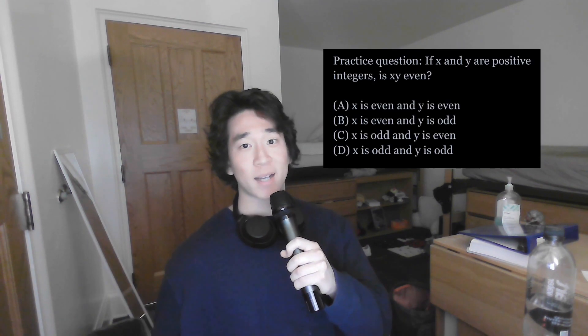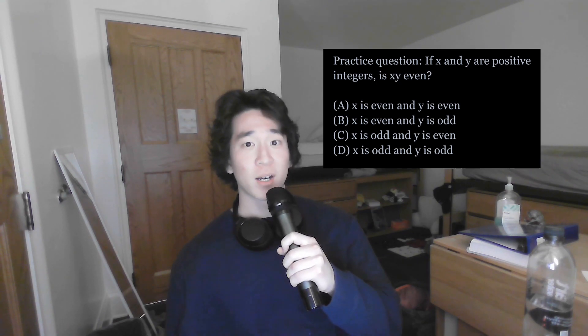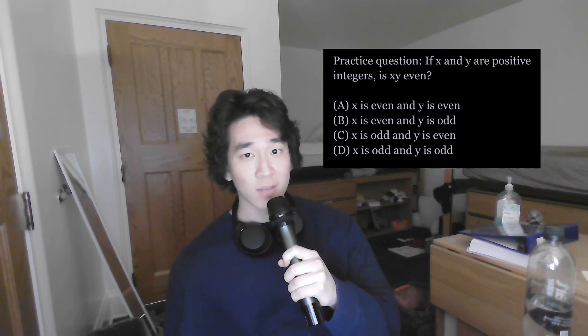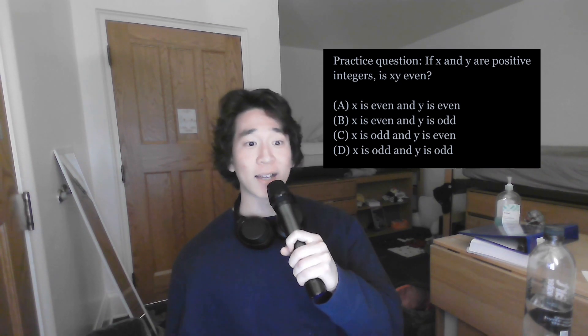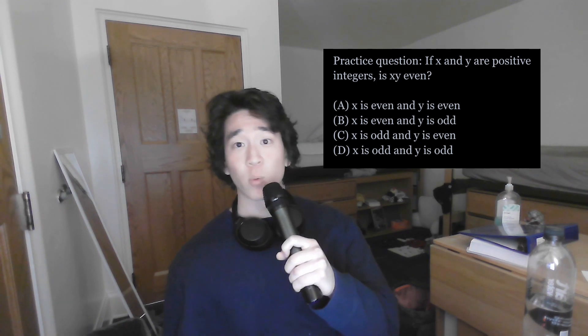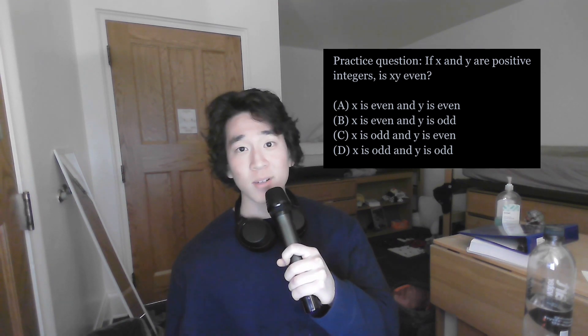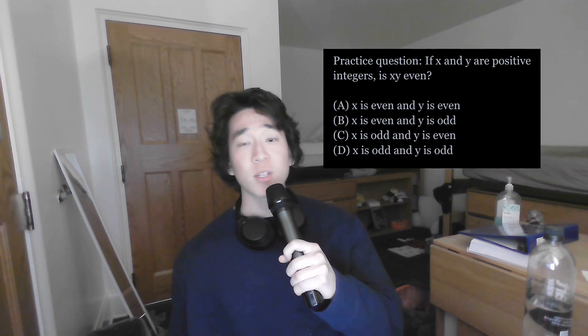For example, let's say we have this practice exam question: if x and y are positive integers, is x times y even? The choices being: x is even and y is even; x is even and y is odd; x is odd and y is even; and x is odd and y is odd. To answer this question, we don't even need to memorize a formula. Instead, we just need to know the concept of even and odd numbers. We know that an even number is divisible by two and an odd number is not. Therefore, if both x and y are even, then x times y would be even, because the product of two even numbers is going to be an even number.